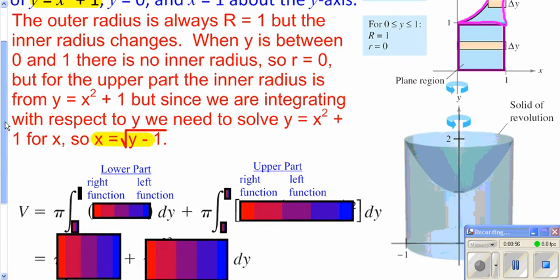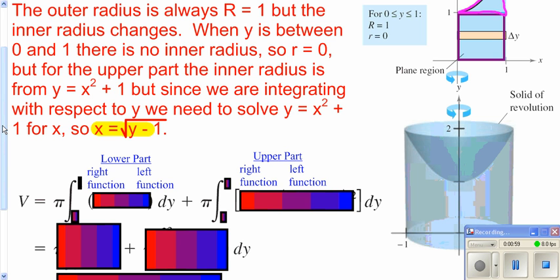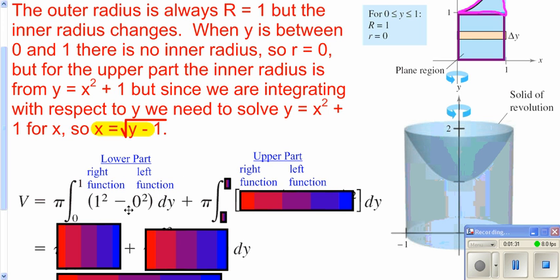We now need to go ahead and work this out. We're going to start with our basic function — pi. In this case, we're going to integrate from 0. I'm going to do the bottom purple part from 0 all the way up to 1. Since we're integrating with respect to y, I need to look at my y values for my limits. Then I need to go ahead and look at my outer radius minus my inner radius. My outer radius is one unit over; my inner radius there isn't any, so it's really 1 squared minus 0 squared for the bottom part, so you just get your integral of 0 to 1 of 1.